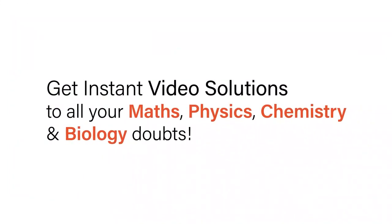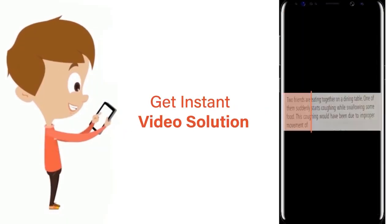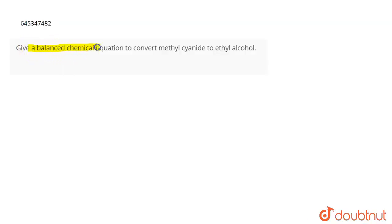With Doubtnet, get instant video solutions to all your math, physics, chemistry, and biology doubts. Just click the image of the question, crop the question, and get instant video solution. Download Doubtnet app today. The question is: give a balanced chemical equation to convert methyl cyanide to ethyl alcohol.